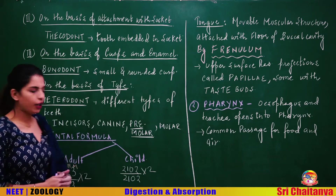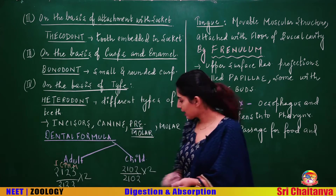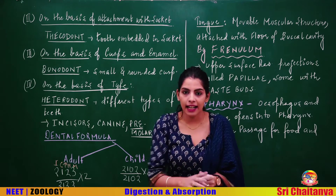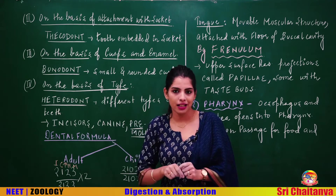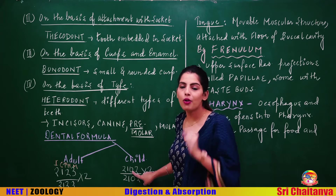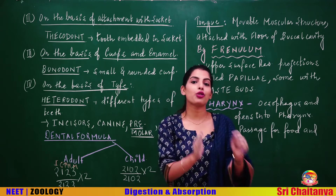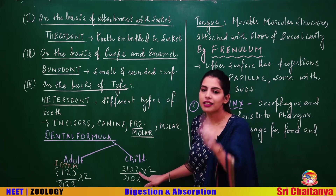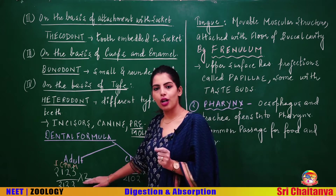The child dental formula is 2, 1, 0, 2 / 2, 1, 0, 2. The zero stands for premolars, since premolars come only once in a lifetime — they are monophyodont. Although we said human teeth are diphyodont, both premolars and the last molars are exceptions — they are monophyodont, coming only once in the lifetime.